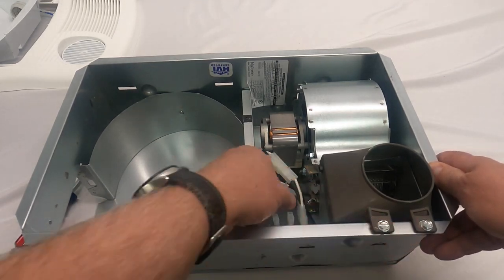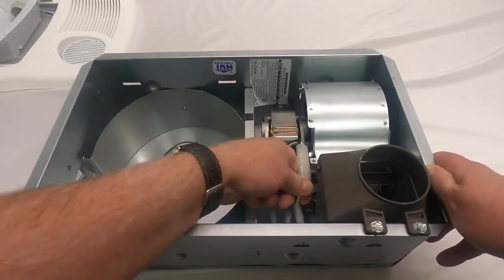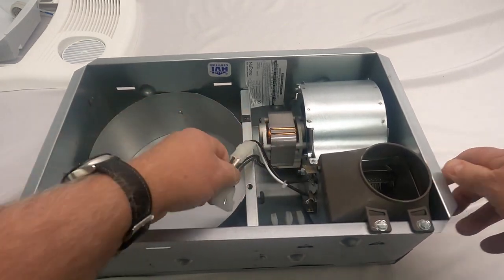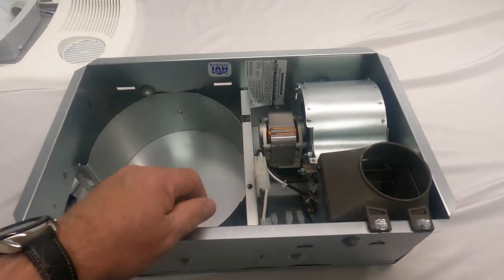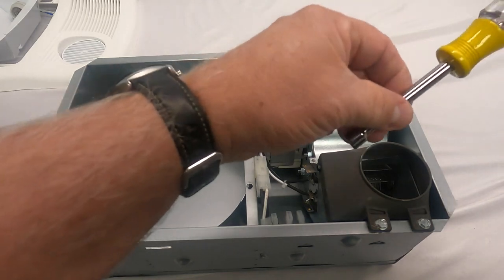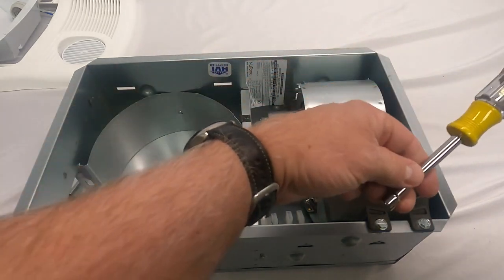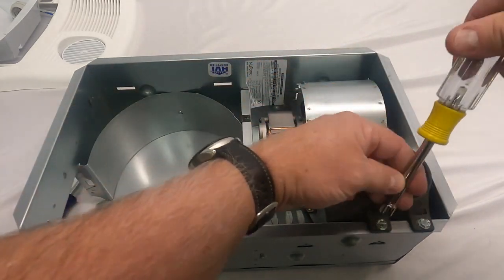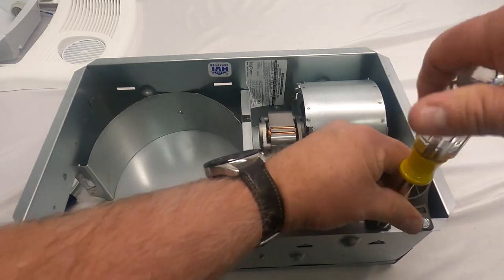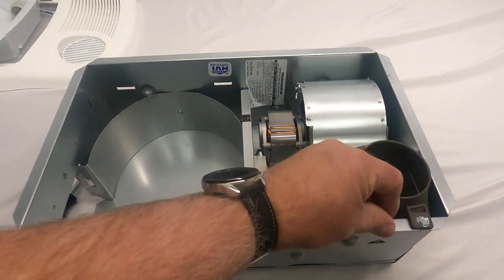First thing to do to get this heater assembly out, unplug it, just like so. There's two screws. And you're going to remove those two screws.